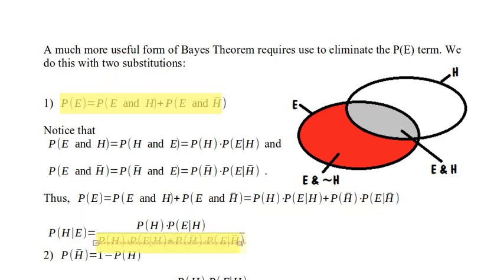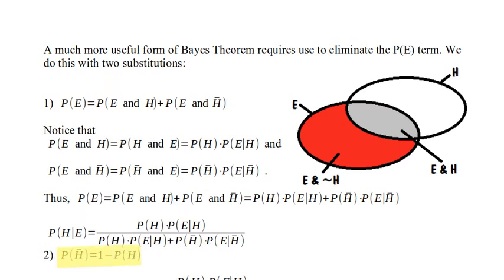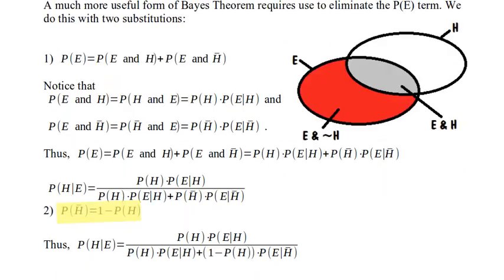You might say there's new stuff that crept in, including the probability of not H. But if we can find the probability of H, the probability of not H is just as straightforward — it's just one minus the probability of H. So one more algebraic translation and we've got it: the probability of not H becomes one minus the probability of H.